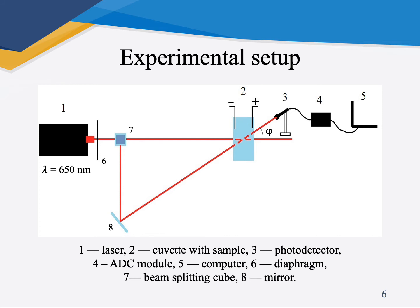The following measurement algorithm was used to calculate the parameters of fullerenol. At the first step, the solution was prepared with the concentration necessary to comply with the condition of Gaussian scattering statistics and the single scattering condition. The laser beam was directed to a beam splitting cube to create a heterodyne observation point. The resulting interference pattern was recorded by the photodetector at angles with a small degree. The laboratory stand was connected to a computer and the program was launched to record and process scattering signals. The data necessary for the measurements — the duration of the measurements, the parameters, the electric field strength — were entered into the computer program. The signal was recorded and subsequent calculations of the autocorrelation functions were performed, and the received data were processed and analyzed.